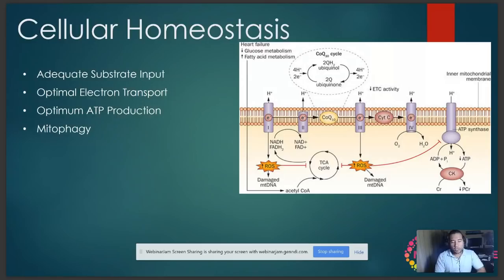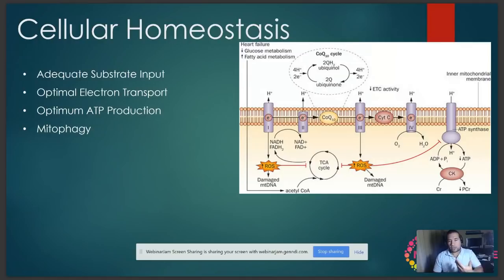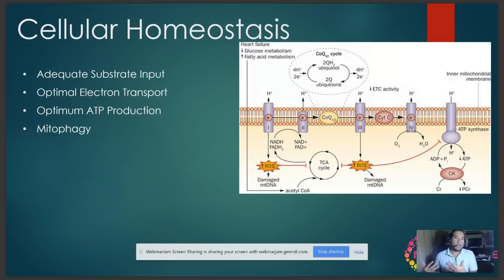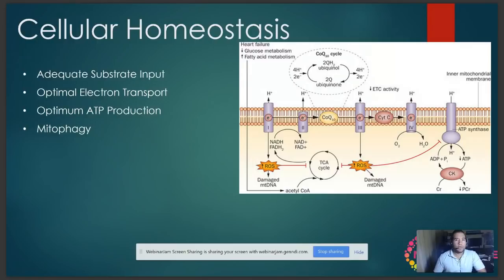The reason ATP maximization matters comes back to ROS — breaking down glucose or fatty acids releases reactive oxygen species that are toxic to the cell. If the cell doesn't maximize ATP production from each molecule, it becomes inefficient and has to conduct metabolism more, producing more ROS. The more ATP produced per glucose molecule, the better — the balance between energy output and ROS generation stays at a healthy homeostatic level.